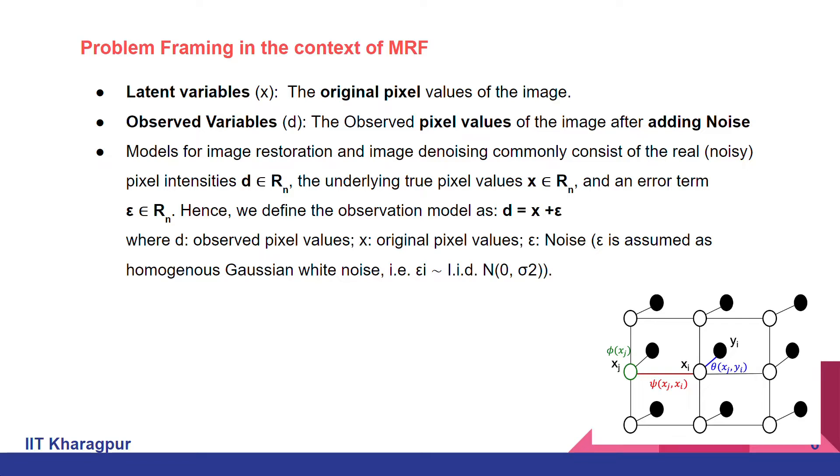These white nodes represent the original pixels, whereas the black nodes represent the image that we are currently observing.